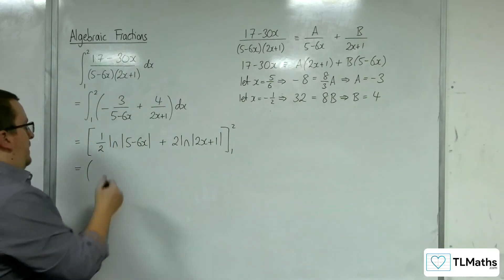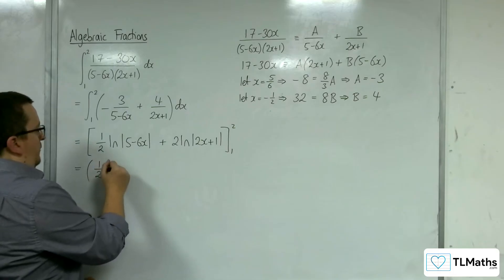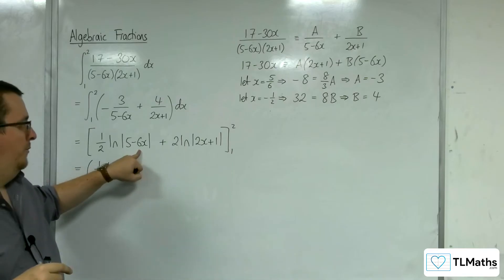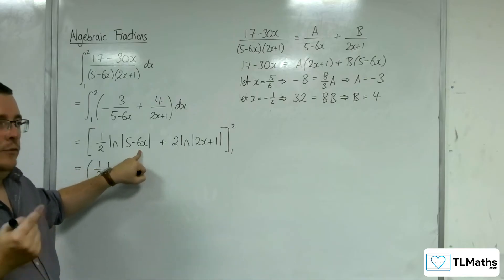So, we've got to substitute the 2 in first. So, 1 half log of 5 take away 6 lots of 2. So, 5 take 12 is negative 7.